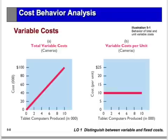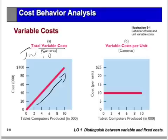On a graph, total variable costs increase in total with increases in the level of activity, but on a unit basis the cost remains the same. So when we say a variable cost is a cost that changes in total in direct proportion to changes in the level of activity, keep that in mind.